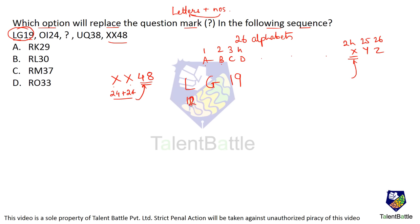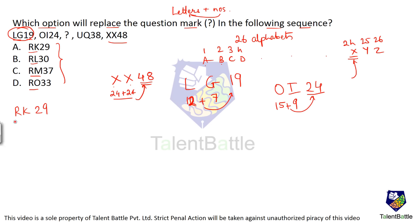Looking at XX48: position of X is 24, plus 24 equals 48. For LG19: position of L is 12, position of G is 7, and 12 plus 7 equals 19. For OI24: position of O is 15, position of I is 9, giving 24. So the number equals the sum of the position numbers of both letters. All remaining options start with R, so R is 18.